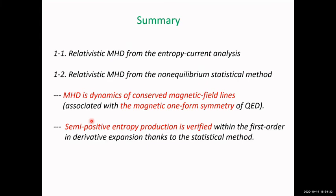Let me summarize my talk. I discussed the recent re-formulation of relativistic MHD. In the first part, I discussed entropy current analysis. In the second part, we discussed microscopic derivation based on a non-equilibrium statistical method. We showed that MHD is the dynamics of conserved magnetic field lines, which you can attribute to the magnetic one-form symmetry of QED. We also verified the semi-positivity of entropy production within first order in derivative expansion, thanks to our statistical method.